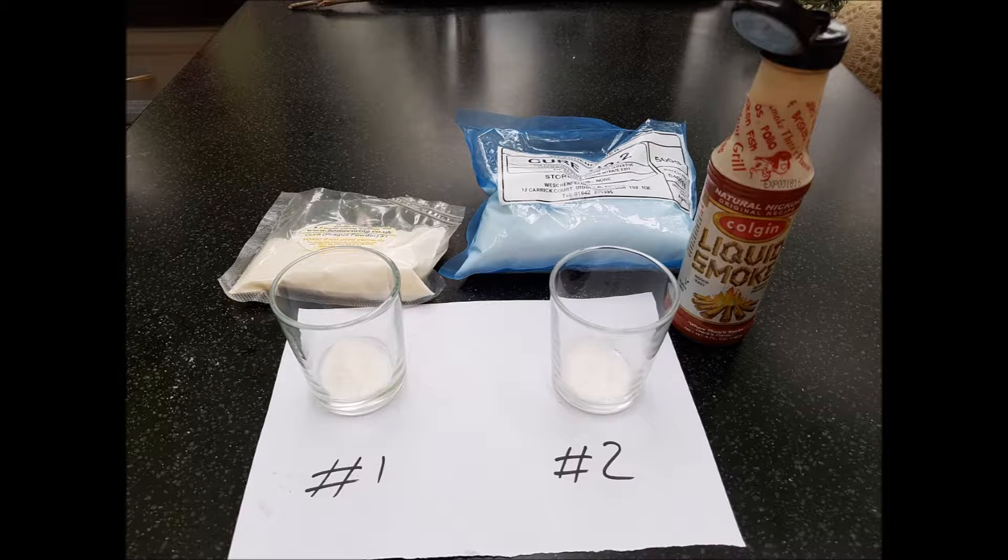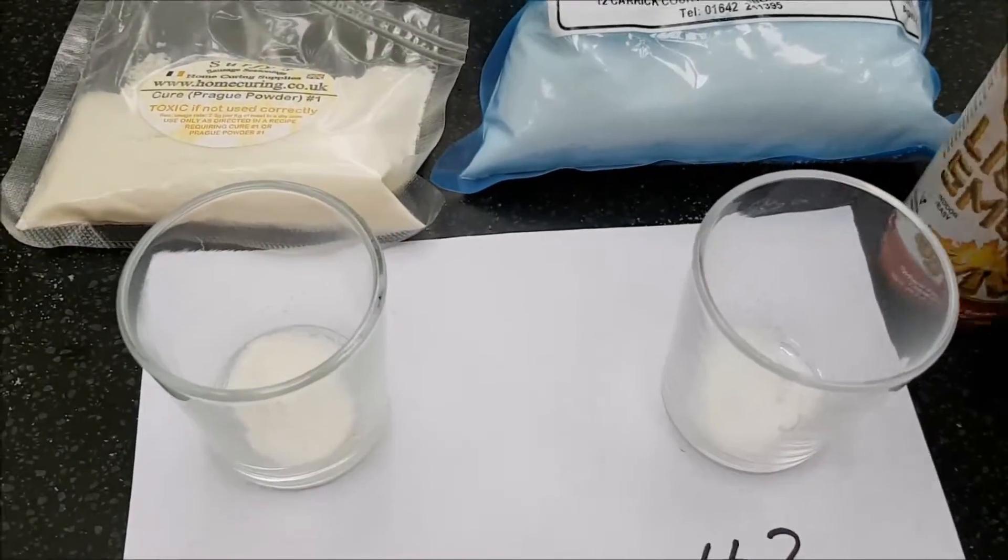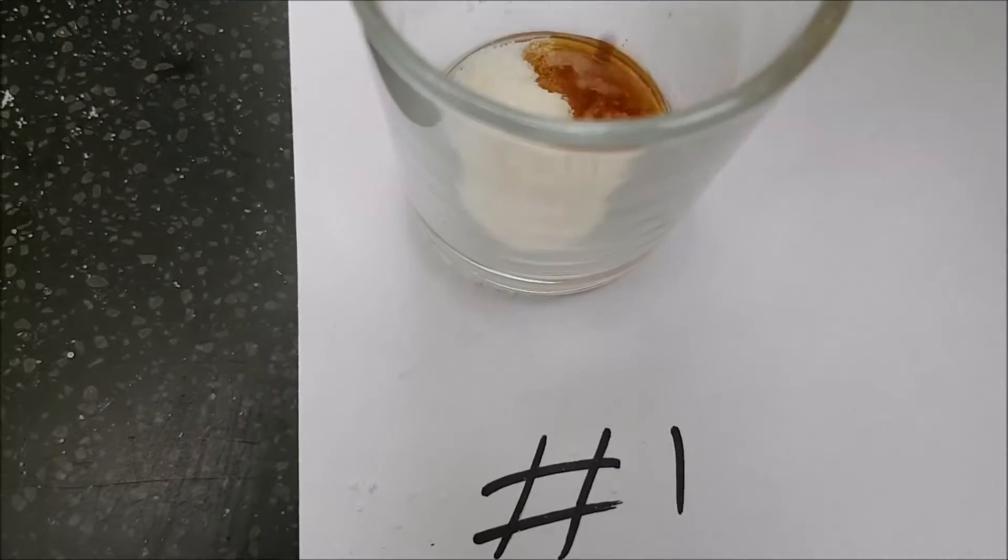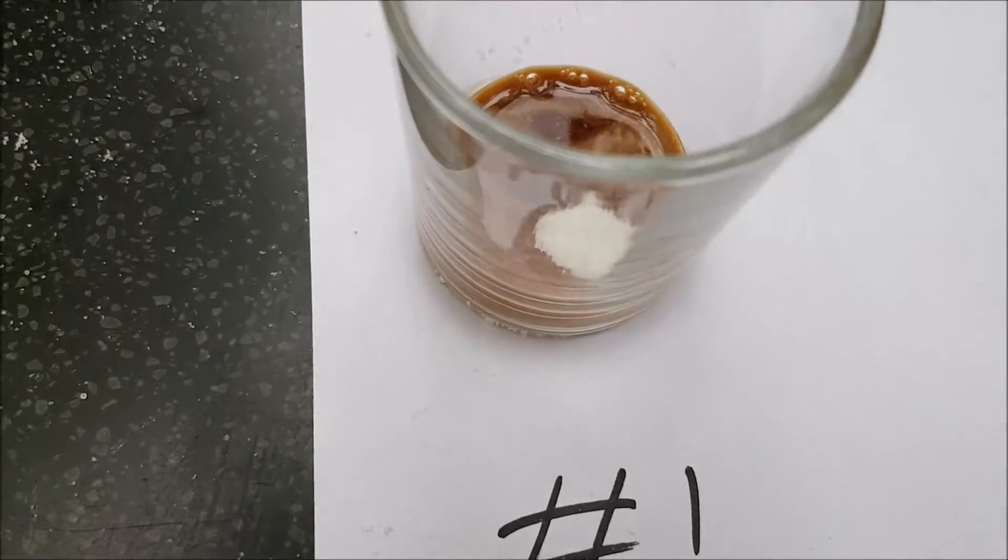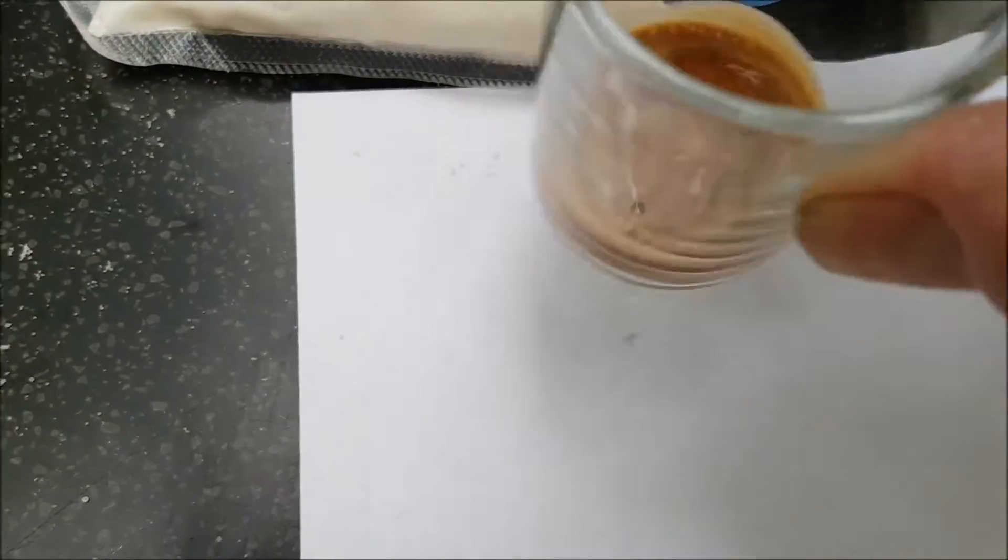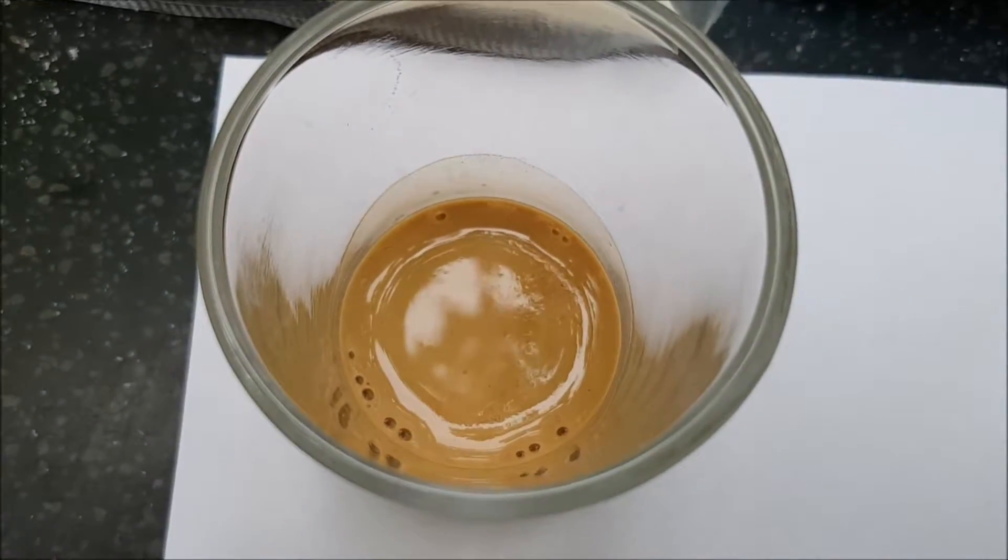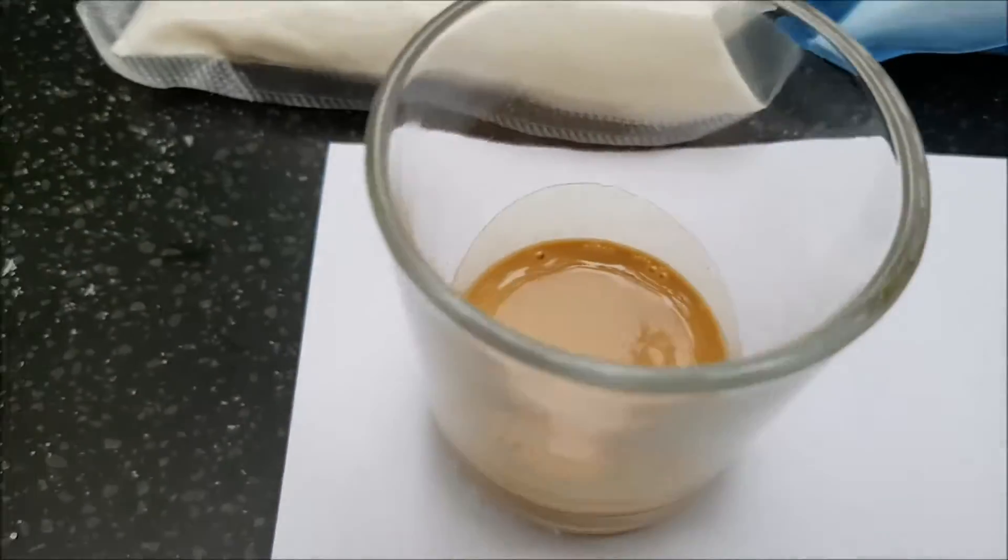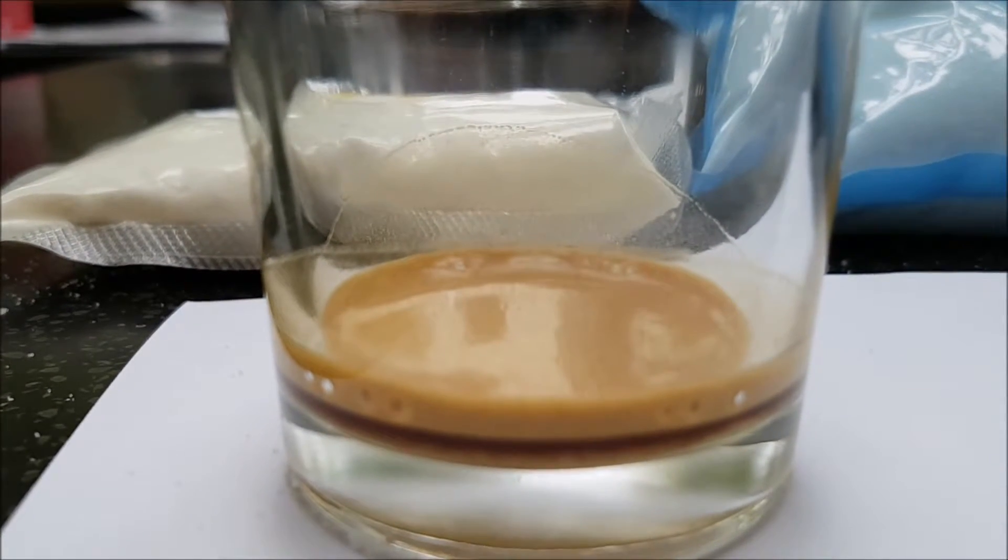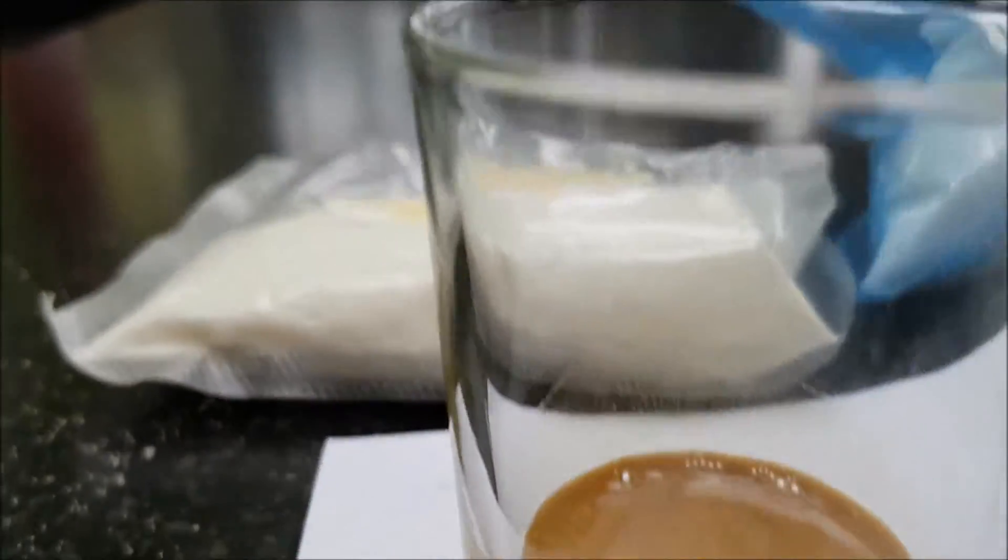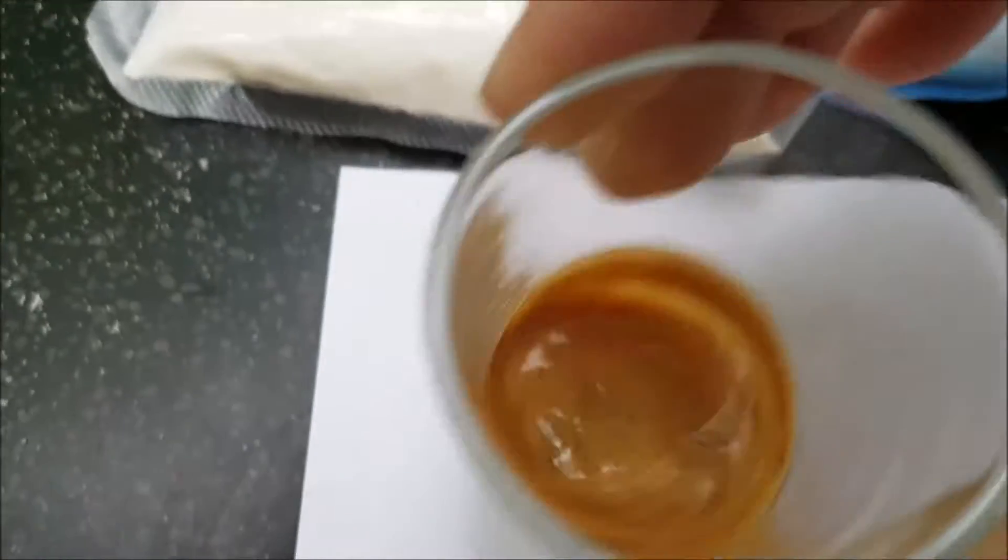So now we do the cure with liquid smoke which is reported to be very acidic. Add the liquid smoke and immediately it looks like an espresso coffee where we are seeing a foam forming on the top of the cure. It looks as if with the liquid smoke we are getting a stronger reaction than we got with the vinegar.